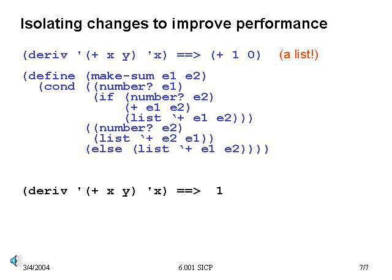So, to summarize: by isolating data representations from data use, it becomes much easier to make changes in the behavior of our system without requiring detailed and intertwined coding changes. This leads to cleaner code, which is much easier to maintain and modify.